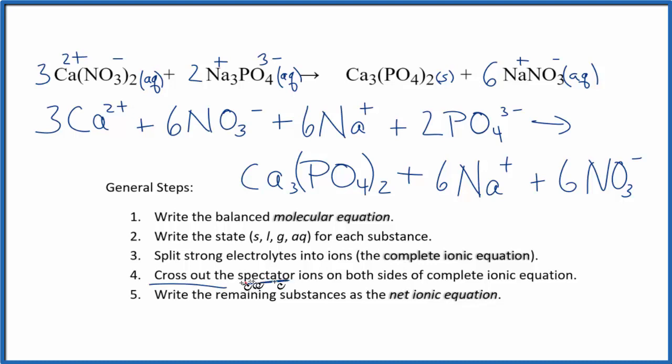Now we can cross out spectator ions on both sides of the equations. And that will give us our net ionic equation. So let's see. 3 Ca2+ on the reactants. We don't have that on the products. We do have six nitrate ions here and six here in the products. So we cross those out. Six sodium ions here in the reactants and then six in the products. We can cross those out. Everything else is unique though. So we now have our net ionic equation.